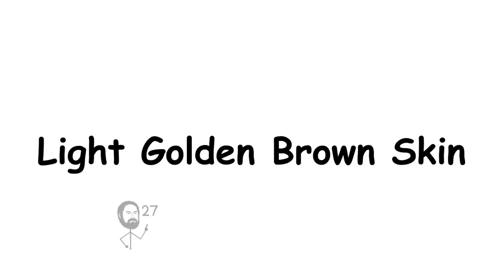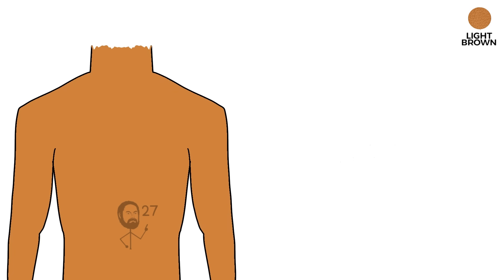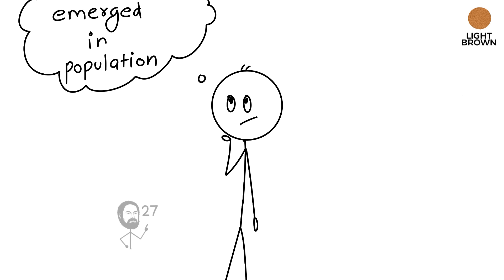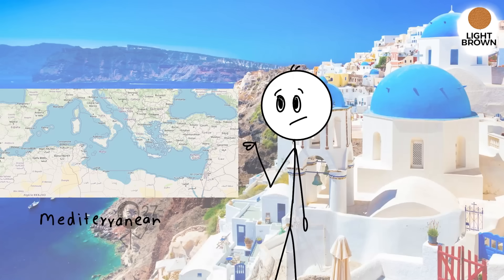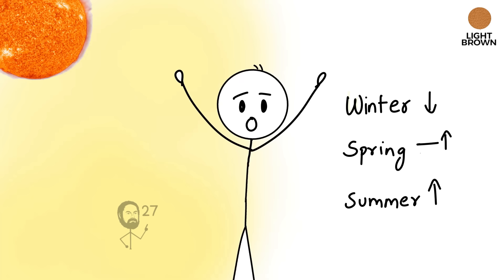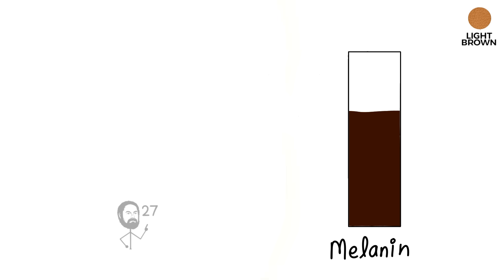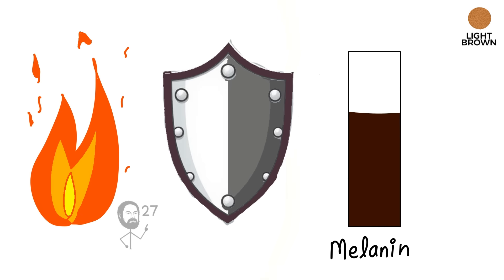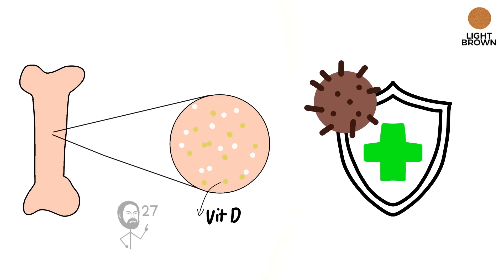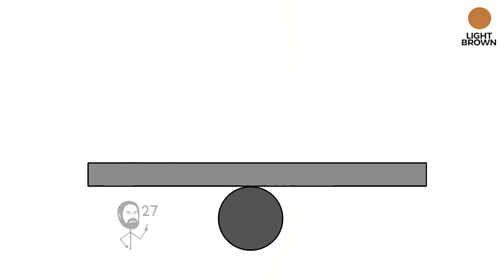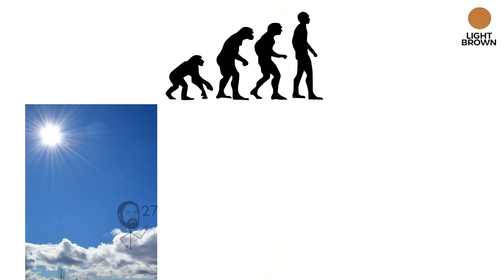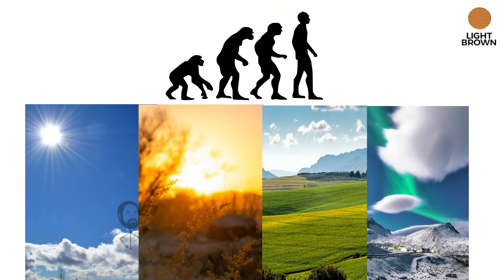Light golden brown skin. This tone appears as a lighter shade of brown with warm golden or sun-kissed undertones. It emerged in populations living in regions such as the Mediterranean, North Africa, and parts of South Asia, areas where sunlight is abundant but moderated by distinct seasons. The melanin level provides enough protection against burning while still allowing efficient production of vitamin D, an essential nutrient for bone strength and immune function. This equilibrium between shielding and absorption reflects an evolutionary adjustment to climates with both high solar exposure and periods of reduced intensity.